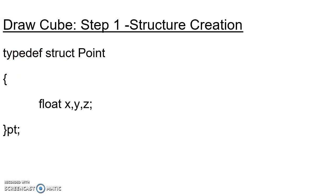For drawing a cube, first of all in stage number one, we have to declare a structure — a point structure. We need this structure to represent a point. In our case, our point is in a 3D environment, so our point must have three attributes: X location, Y location, and Z location. The data type for all these values is float. As you are already familiar with the structure concept, you can declare such a structure easily.